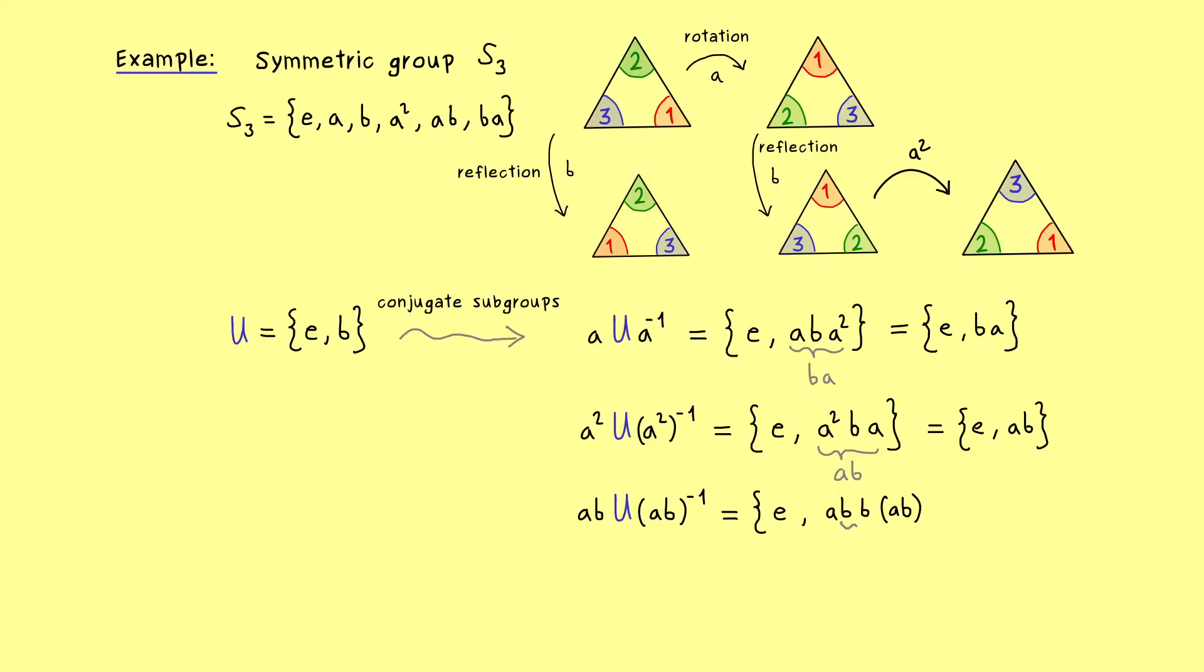And moreover you should see in the middle we have b squared which is equal to the identity. So what we actually have is just a squared times b. And similarly to before we can do the calculation and we find out that this is actually ba. Alternatively you can also conclude that from the equations we already have here. But most importantly the result is that we get the same group as before.